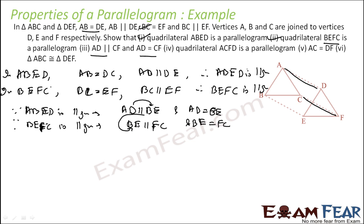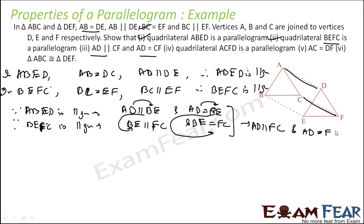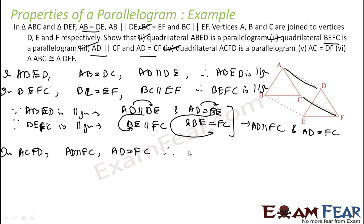Since AD is parallel to BE and BE is parallel to FC, this implies AD is parallel to FC. Similarly, AD equals BE and BE equals FC implies AD equals FC. Therefore, since AD equals FC and AD is parallel to FC, ADFC is a parallelogram.